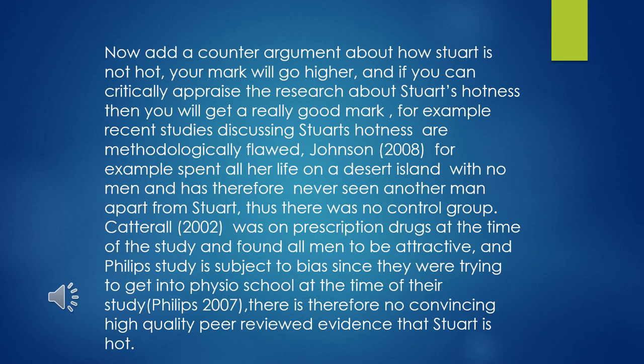At level four — your first year — it's okay to just present back the data from references. But at higher levels, in years five and six, that won't suffice. Rather than just quoting, it's better to critique the literature: pull apart what's been said. For example, if Johnson was biased towards me because I'd done them a favour, that affects the reliability of the source. If you can start to engage with the quality of the literature and present counter-arguments, that's going to be very successful — though it's quite hard to do at level four.